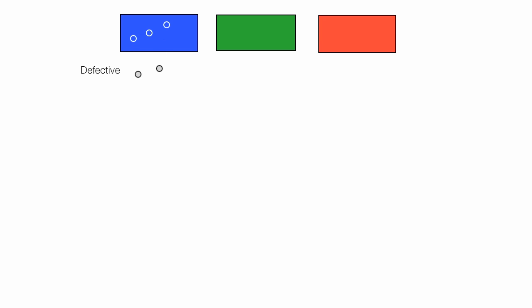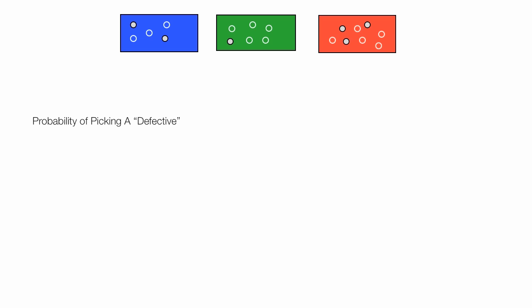Imagine there are three boxes, and in each box there are defective and normal parts. The defective ones will be gray and the normal parts will be colored — in this case blue ones. In each box there's a different number of defective and normal parts. I'm going to show you how to calculate the probability of picking a defective part and also the probability of picking a normal part.